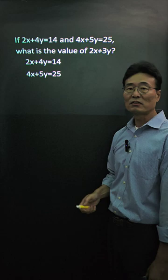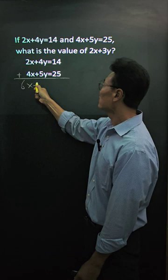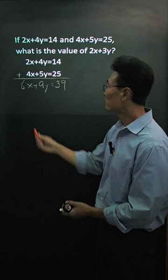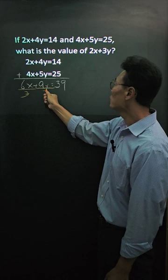Then we get 6x plus 9y equals 39. Notice that if I divide the 6x by 3, I get 2x, and if I divide the 9y by 3, I get 3y.